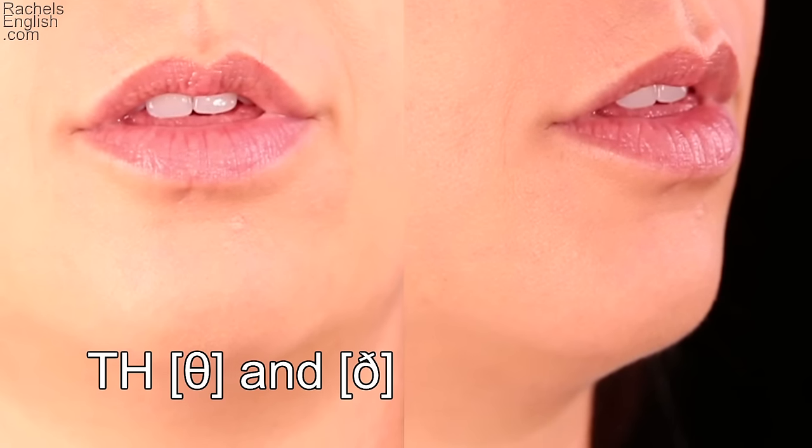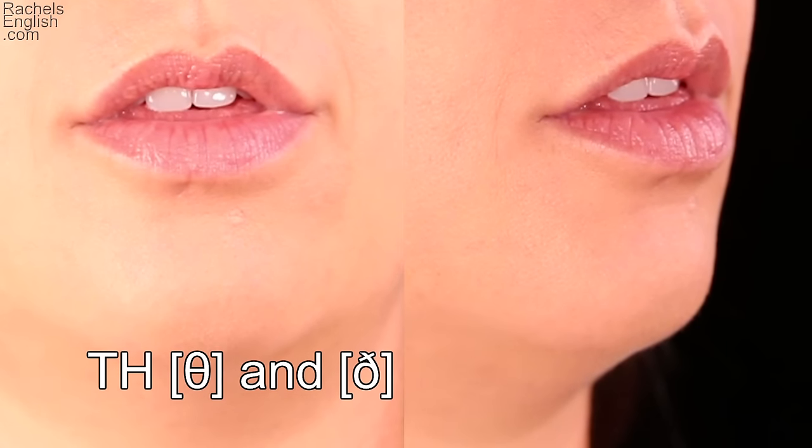Let's look at these sounds up close and in slow motion. Notice how it's just the very tip that comes out of the teeth. The tongue is relaxed, the teeth surround it, but they're not clamping down on it. The lips and face are relaxed.